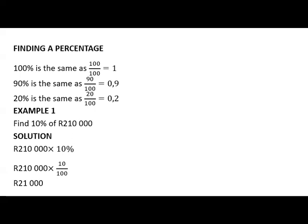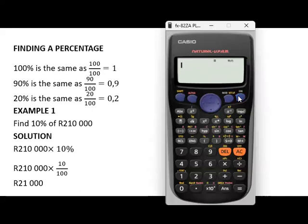Or you can go straight to it by putting it into the calculator like this. Take R210,000, times it by 10, shift, percentage, you will get R21,000. That's how you will get a percentage.